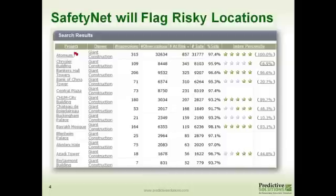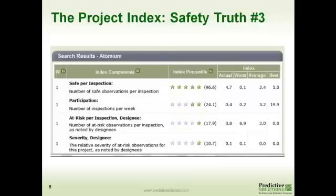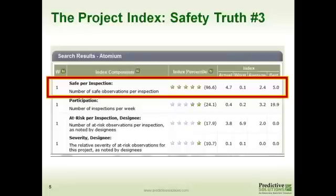Within SafetyNet, if your particular location or project facility is flagged, you can find out how they compare by looking at their index percentile. You can see that the number of safe observations per inspection is really high compared to the average — they're at 4.7 where the average is 2.4. This may indicate a very safe location, but if everything is found safe, then we need to change our checklist because it's no longer being useful.